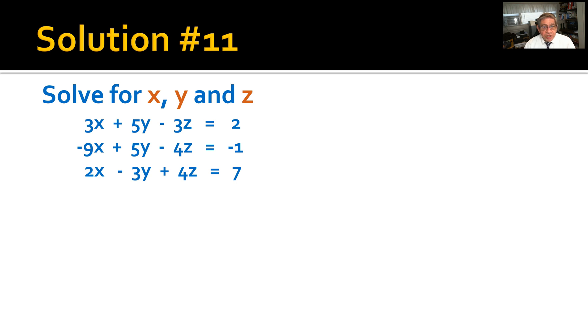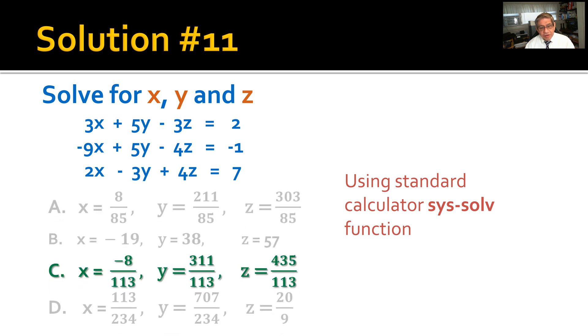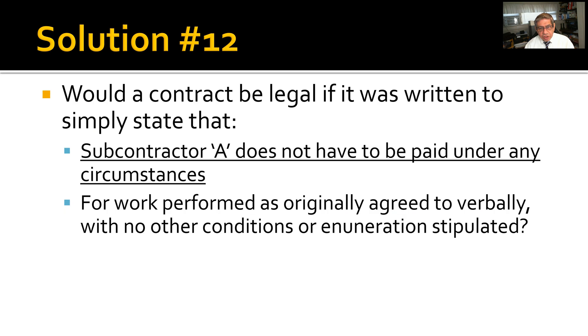Solution number 11: Solve for x, y, and z given this three-level simultaneous equation. Use the standard calculator assist solve function. Of the choices given, C becomes the right answer. Solution number 12: Would a contract be legal if it was written simply stating that subcontractor A does not have to be paid under any circumstances, just like that, and there were no other conditions or enumeration stipulated other than what you see underlined?